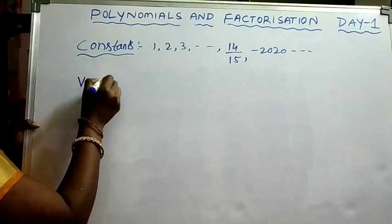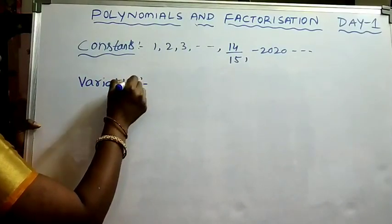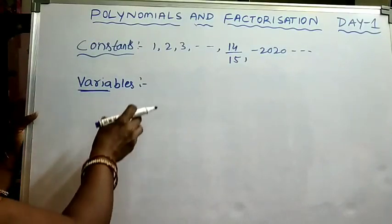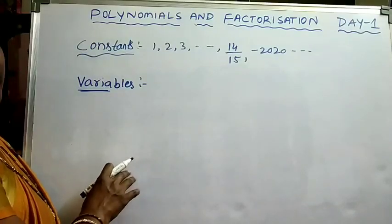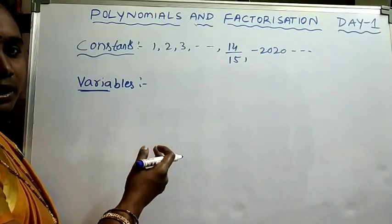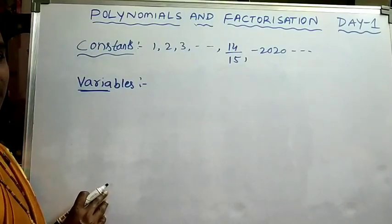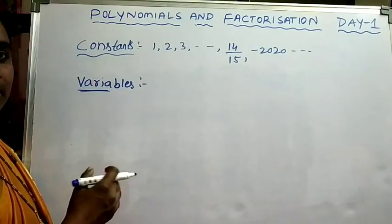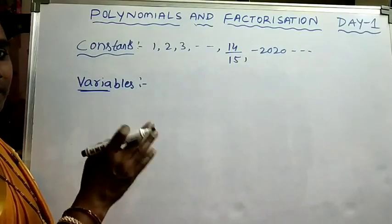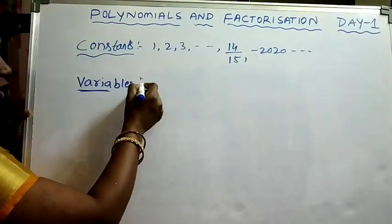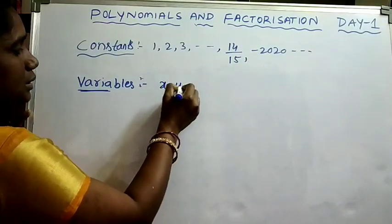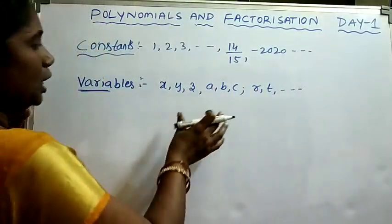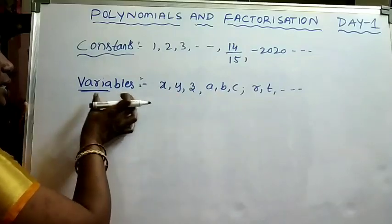Next, variables. Variables means its value varies — varies means changes. That means variables have no fixed value. It will change according to the situation or problem. For example, height of a tree changes day by day. And also your age — it changes every year. We denote variables with English alphabets: X, Y, Z, A, B, C, R, T, etc. All English alphabets can be used as variables.